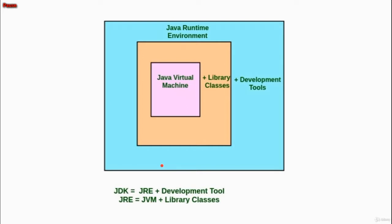Now let's look at the Java Virtual Machine. JVM is a specification where the working of the virtual machine is specified, but the implementation provider is independent to choose the algorithm. Its implementation has been provided by Sun and other companies, and the implementation is a computer program that meets the requirements of the JVM specification.